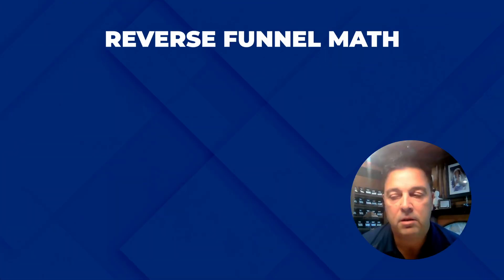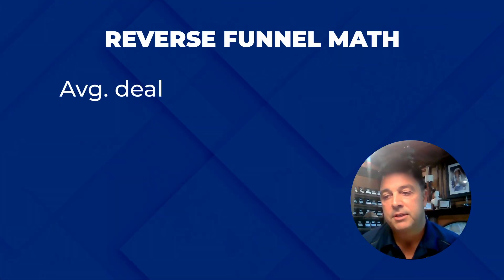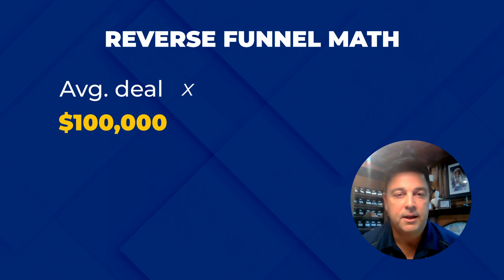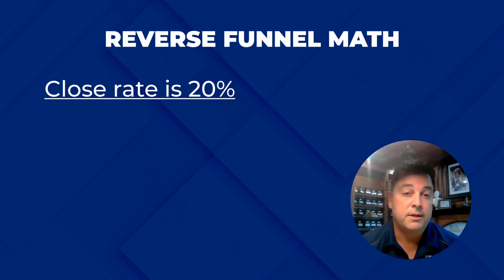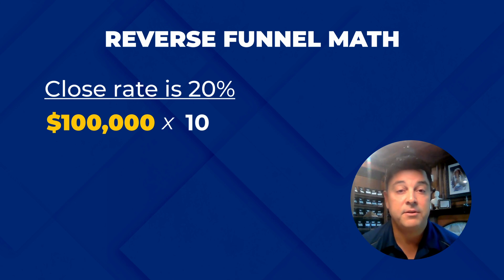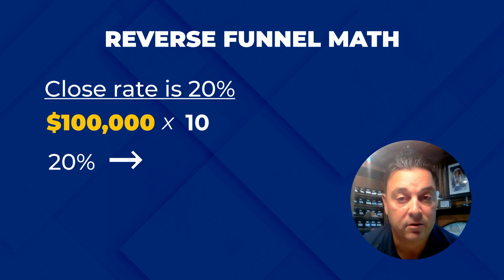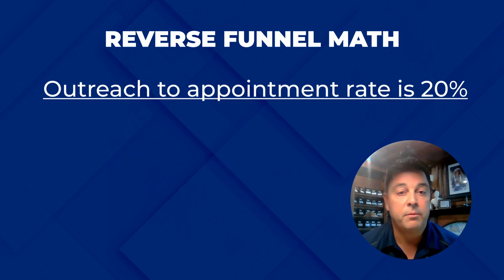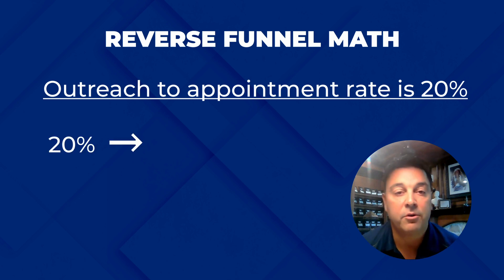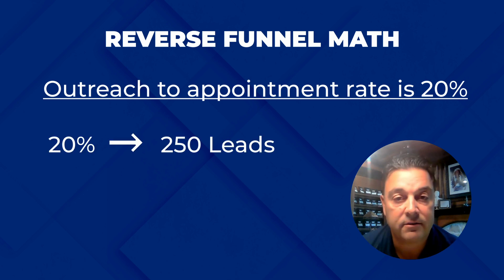Reverse funnel math would look something like this: our average deal size is $100,000, so I need 10 deals. What's our close rate? Our close rate is 20%, so then I need 50 deals in the funnel. And what's our outreach-to-appointment rate? It's 20%, so now I need 250 leads. That's the reverse funnel math.